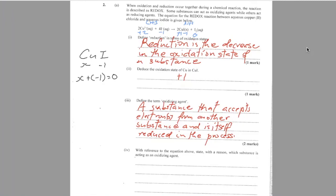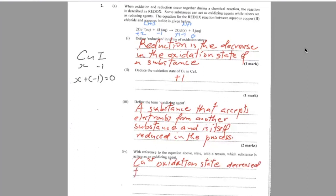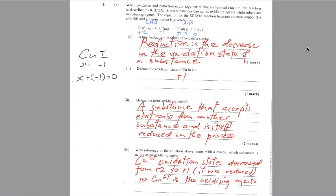Cu²⁺ has its oxidation state decreased from +2 to +1, so it was reduced. Therefore, Cu²⁺ is the oxidizing agent.